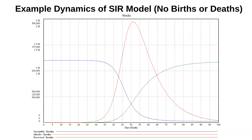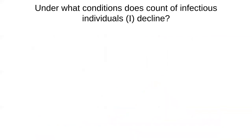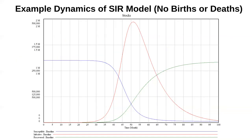Inflow equals outflow. At an individual level, each person infects how many people before they recover at this peak point — exactly one. So the effective reproductive number — it's actually called R-star — equals one. We noted that it declines when the outflow is greater than the inflow, or each person infects fewer than one person before they recover.